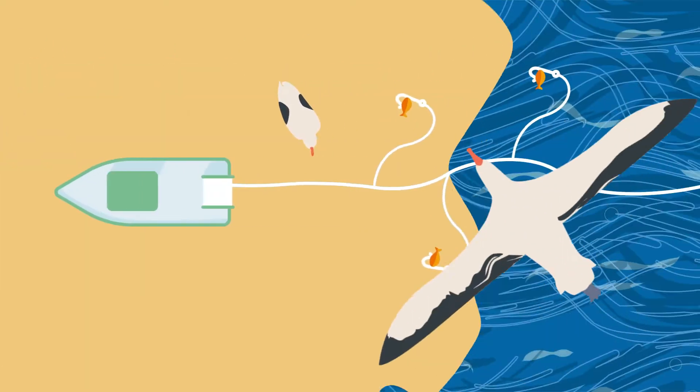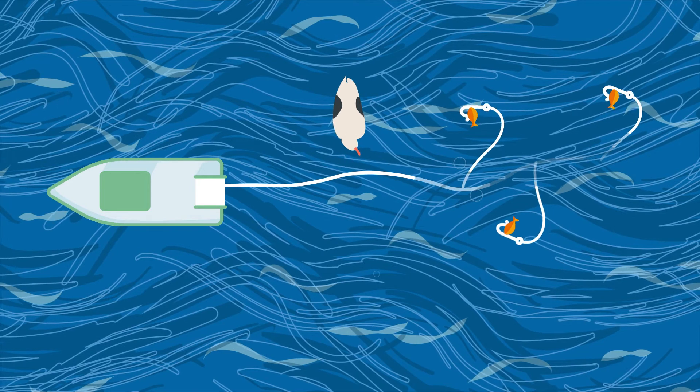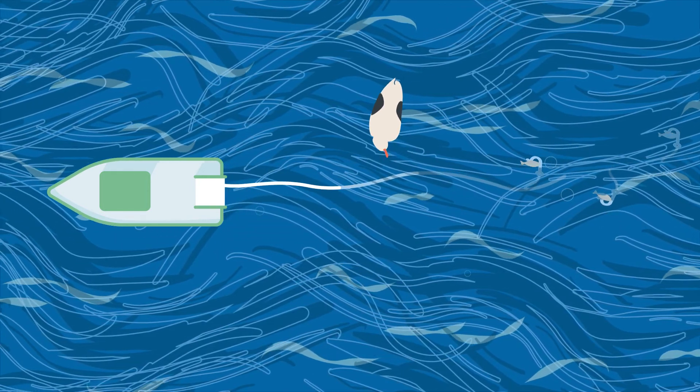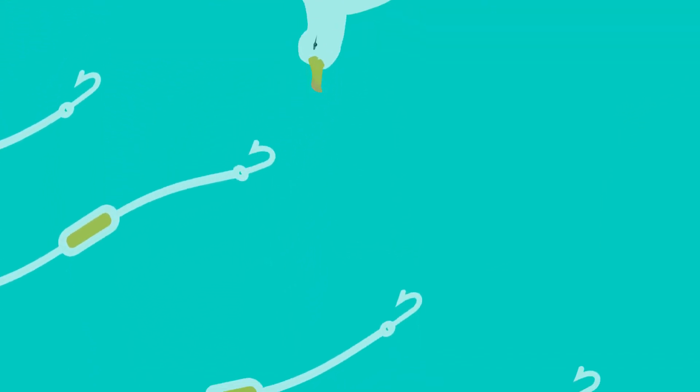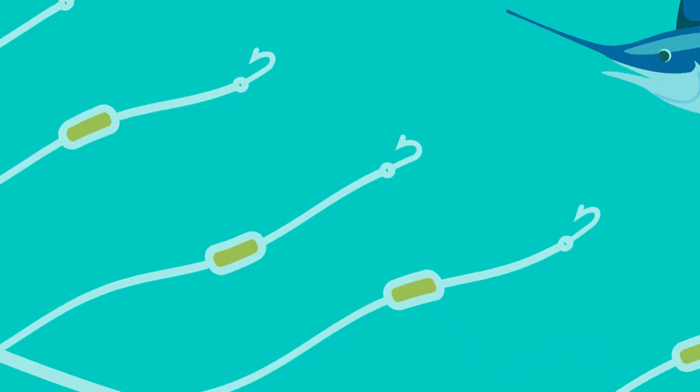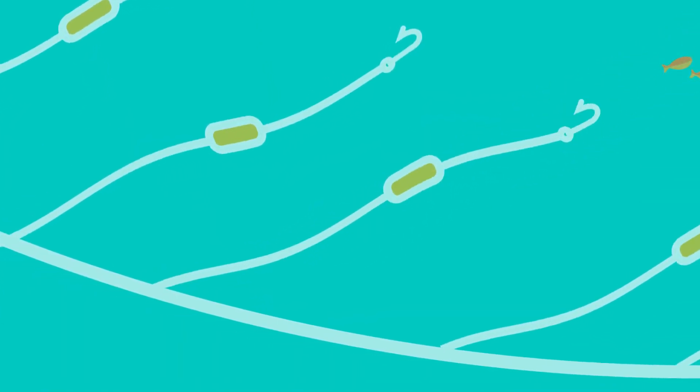In longline fisheries, one of the most effective measures is to sink the baited hooks beyond the diving depths of seabirds as quickly as possible by using heavier weights and putting them closer to the hooks. This reduces the opportunities for birds to snatch the baits and get caught on the hooks before they sink to the desired fishing depth.